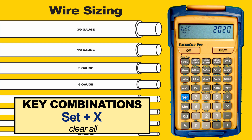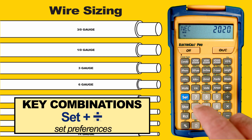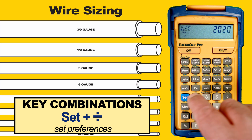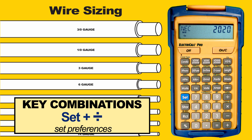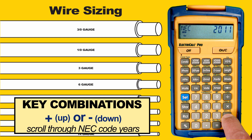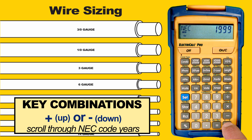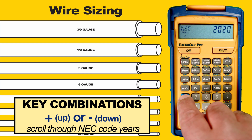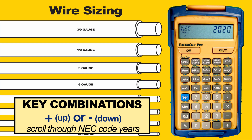If your jurisdiction is not working in that yet, it can be changed. To do this, press Set then Preferences. Using the plus and minus keys you can navigate up and down the list of available code years built into the calculator — this goes all the way back to 1996. We're going to go back to 2020 and press Set to make sure we are using the most current code year.